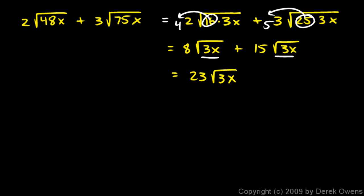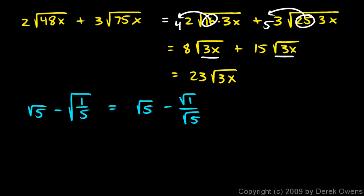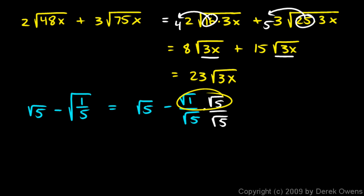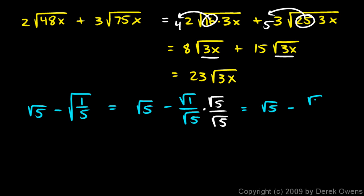The next one involves a fraction under the radical, which is a little tricky. The square root of 5 minus the square root of 1 fifth. I'm going to deal with the fraction under the radical first, rewriting the problem as the square root of 5 minus the square root of 1 over the square root of 5 — broken up into two separate radicals. Then I can multiply by the square root of 5 over the square root of 5, which is perfectly legal since it equals 1. Combining the numerators gives a square root of 5 on top and a 5 on the bottom. So now the problem is the square root of 5 minus the square root of 5 over 5.